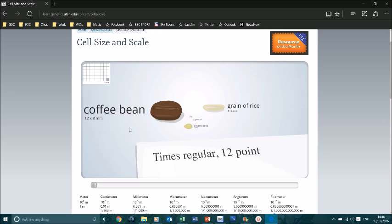So, here we have a coffee bean. Now a coffee bean is 12 by 8 millimetres. One millimetre is one of those small squares on a piece of graph paper.